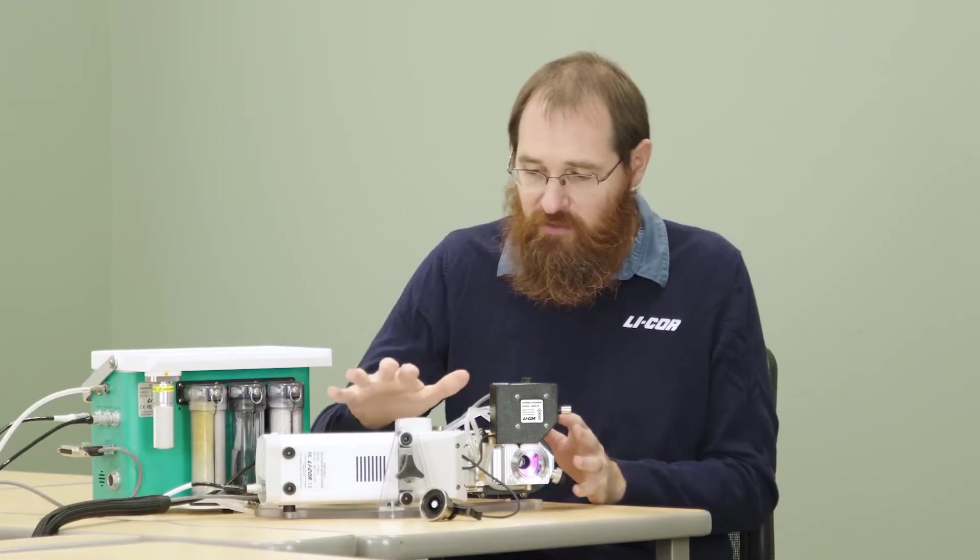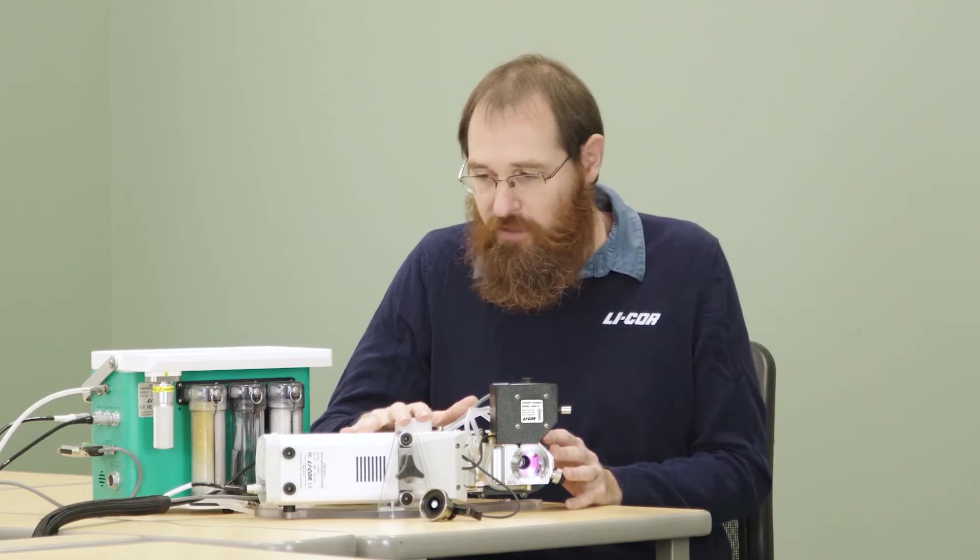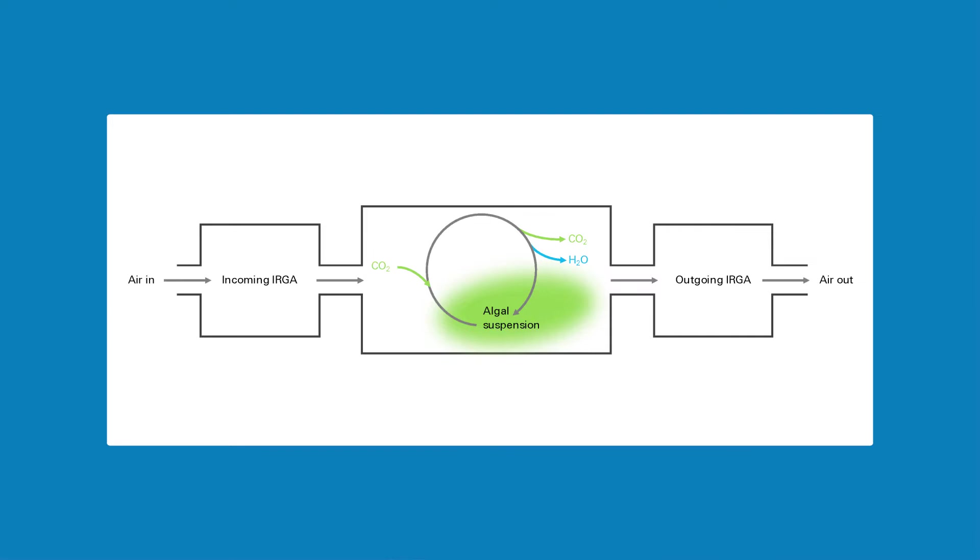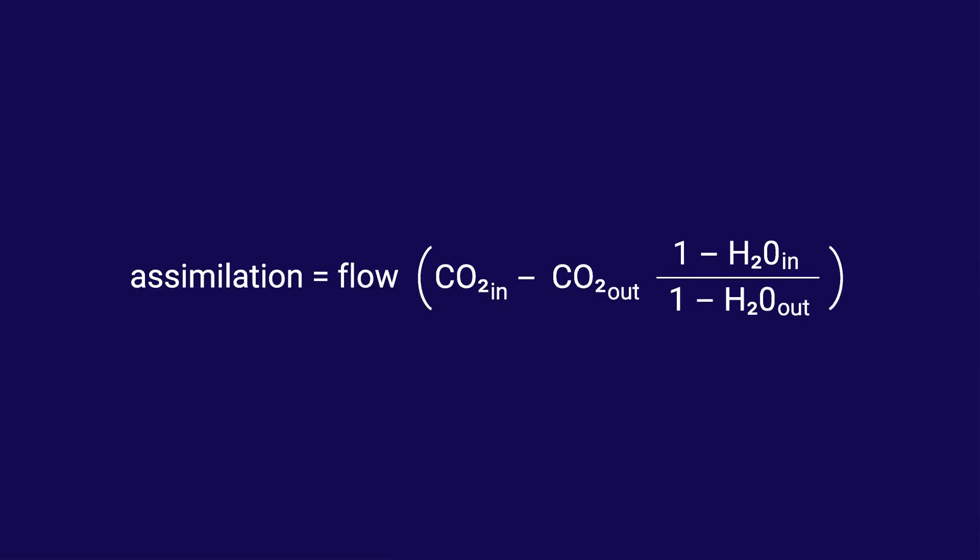That air goes to the sensor head where it gets measured by a pair of infrared gas analyzers. One of those gas analyzers is measuring the carbon dioxide and water vapor concentration of that air before it interacts with the liquid sample. And the other one is measuring the carbon dioxide and water vapor concentration after it interacts with the liquid sample. And we compute the carbon assimilation rate based on the difference in concentration between those two analyzers and the flow rate through the sample.